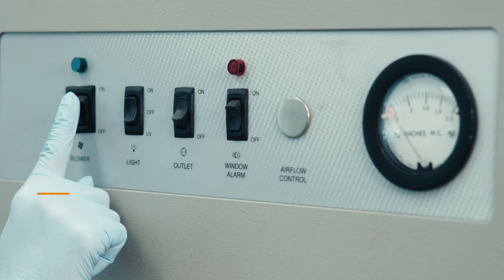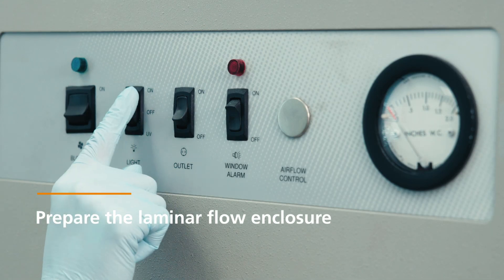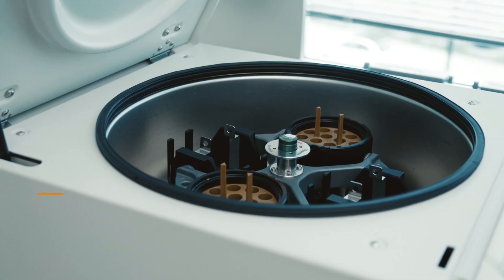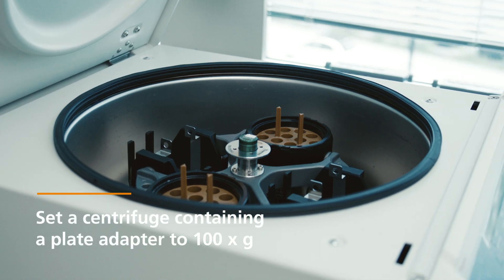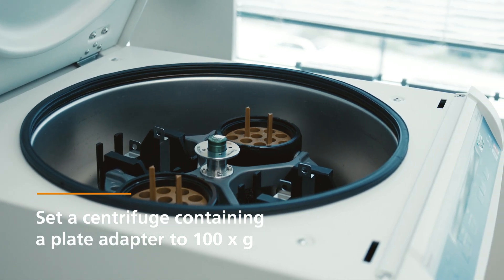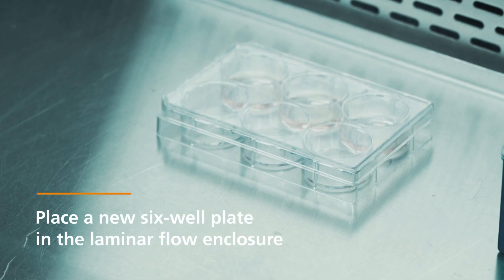Please prepare the following materials and reagents prior to unpacking the neural organoids. Prepare and turn on your laminar flow. Set a centrifuge with a plate adapter to 100g. Place a new 6-well plate in the laminar flow.